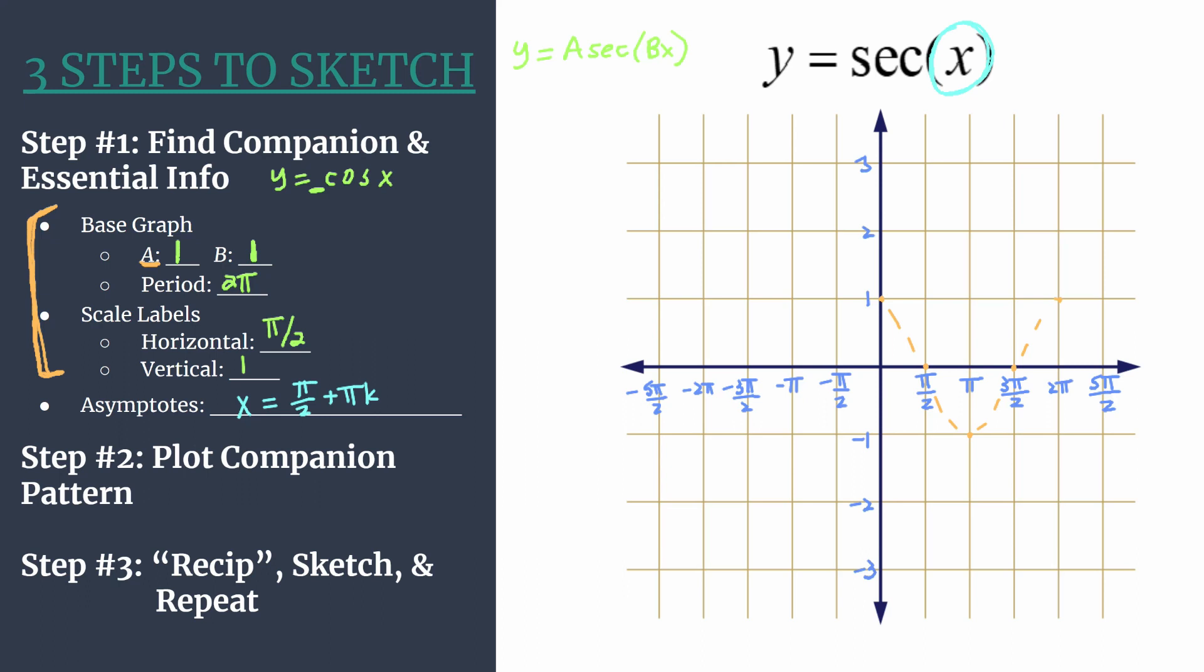So we should know what the secant graph looks like, but if you take the reciprocals, the reciprocal of one is just, of course, one. Think about a point right about here would be one half, so the reciprocal of one half is two. Okay, so we have the curve that starts like this.